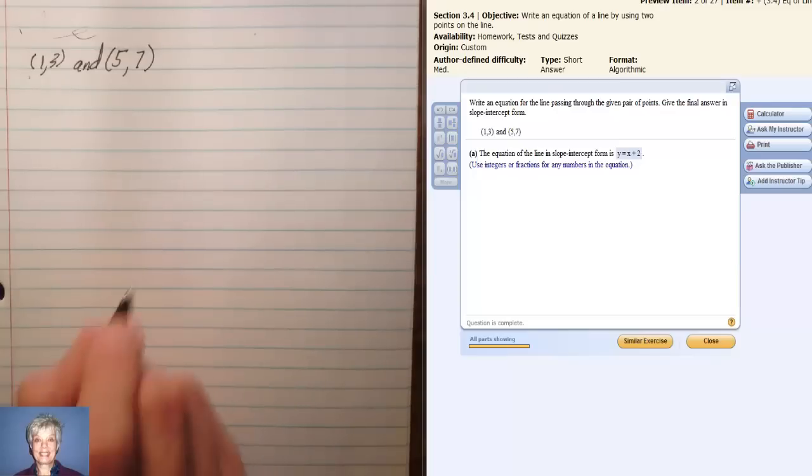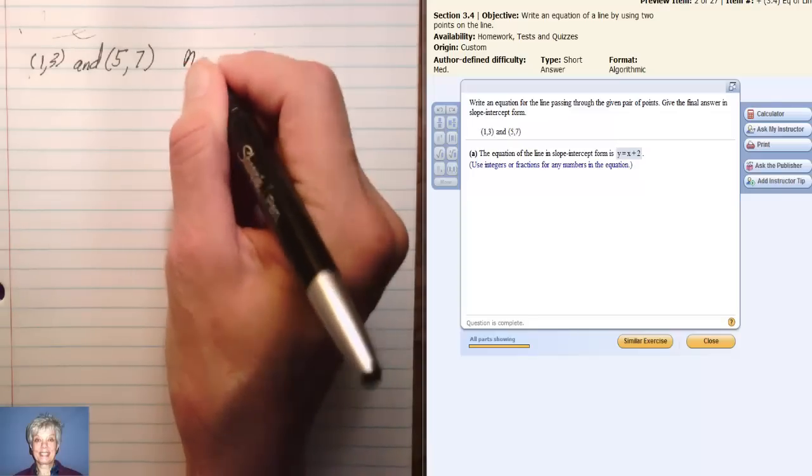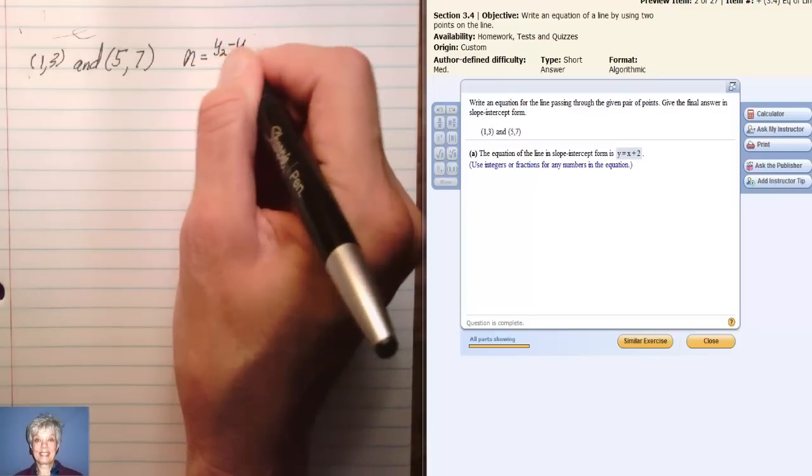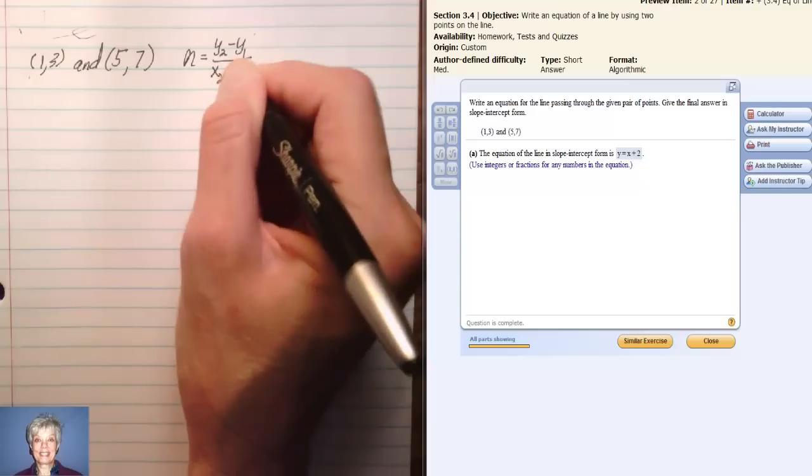Whenever you do this kind of problem, you have to find the slope first. So you need to remember that m equals y₂ minus y₁ over x₂ minus x₁.